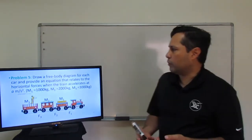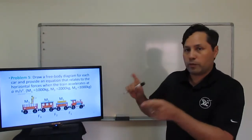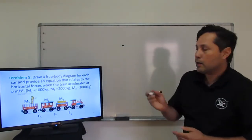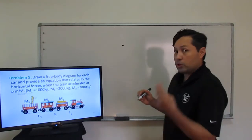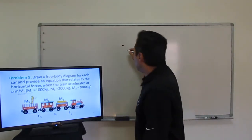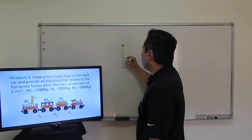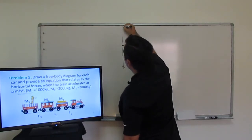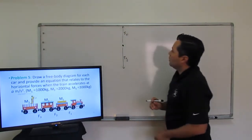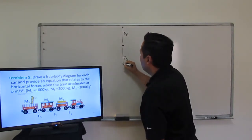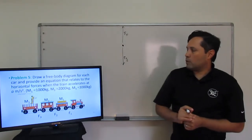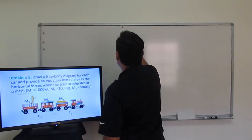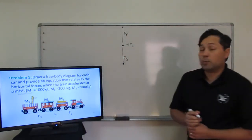We're going to start with the free-body diagrams from left to right, beginning with cart three on the left. For cart three's free-body diagram, there are three forces acting on it: force of gravity downward, force normal upward with the same arrow length as gravity, and force three pulling it horizontally. That will be our first cart's free-body diagram.